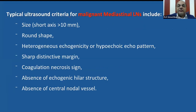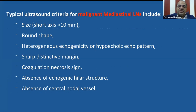Typical ultrasound criteria for malignant mediastinal lymph nodes include size with short axis more than 10 millimeters, round shape, heterogeneous echogenicity or hypoechoic echo pattern, sharp distinctive margin, coagulation necrosis sign, absence of echogenic hilar structure, and absence of central nodal vessel.